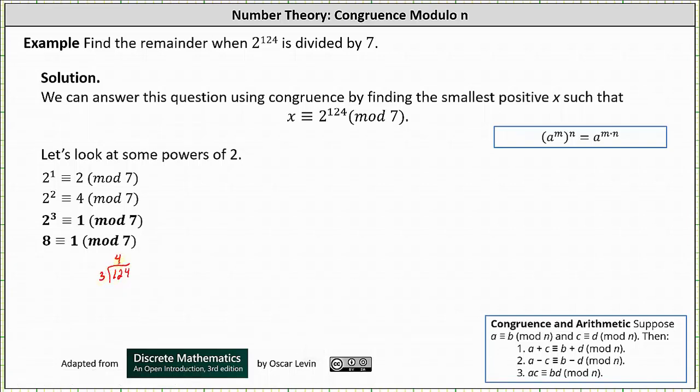There are 4 threes in 12, 4 times 3 is 12. We subtract, the difference is 0. We bring down the 4, there's 1 three in 4. 1 times 3 is 3, we subtract, the difference is 1.